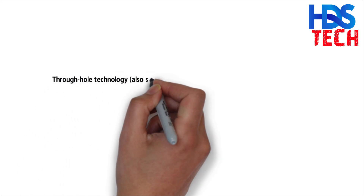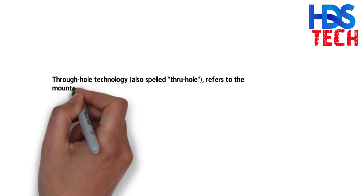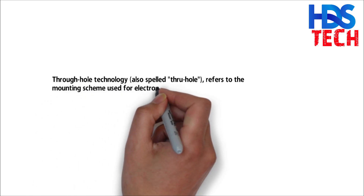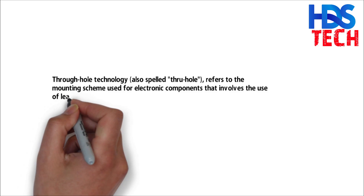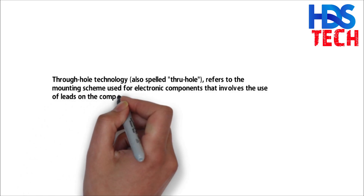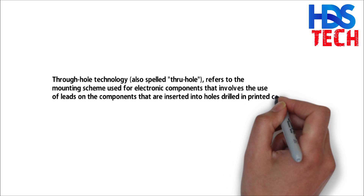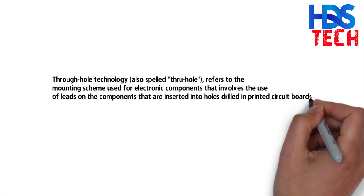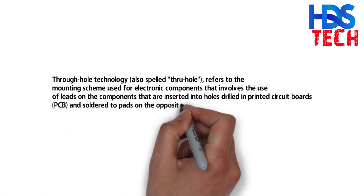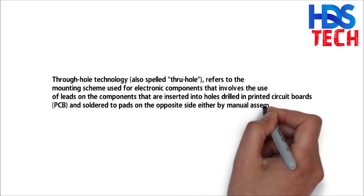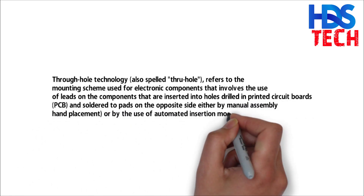Through-hole technology, also spelled through-hole, refers to the mounting scheme used for electronic components that involves the use of leads on the components that are inserted into holes drilled in printed circuit boards and soldered to the pads on the opposite side, either by manual assembly or by the use of automated insertion mount machines.